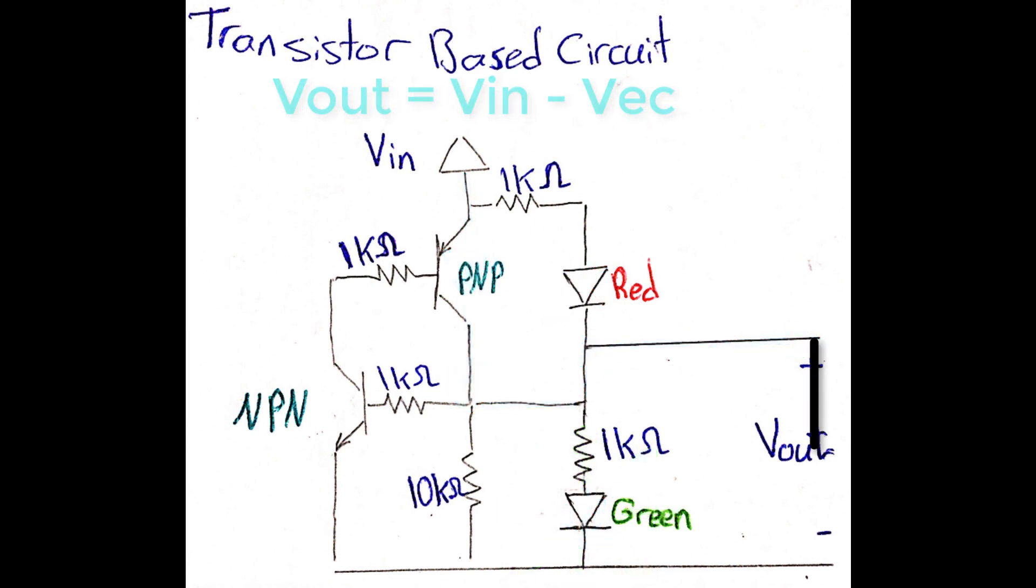And here's what happens when a short circuit occurs at the output. Of course, in such a case, the potential difference at the output will be zero, which will turn off the NPN transistor.